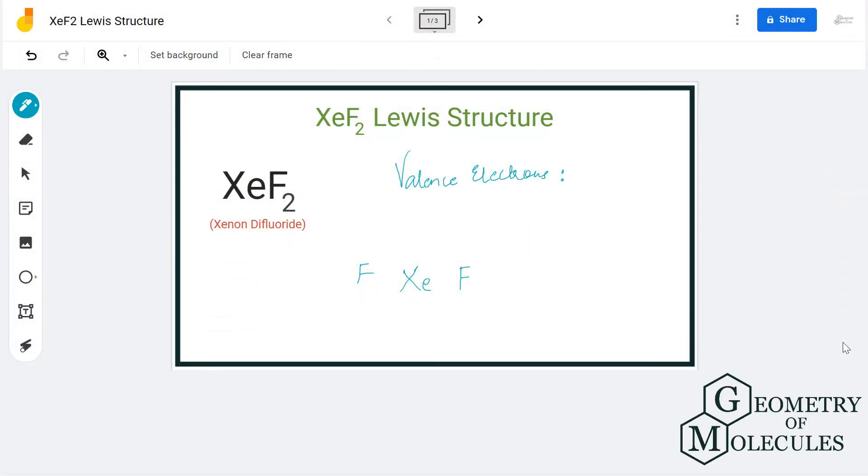Hi guys, today in this video we are going to look at the Lewis dot structure for XeF2. It's a chemical formula for xenon difluoride. It is made up of one xenon atom and two fluorine atoms.